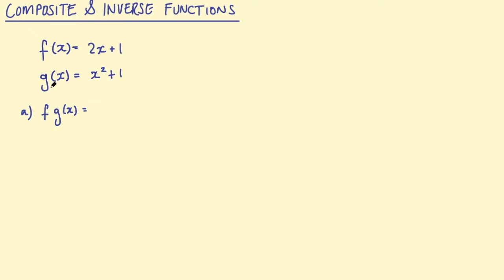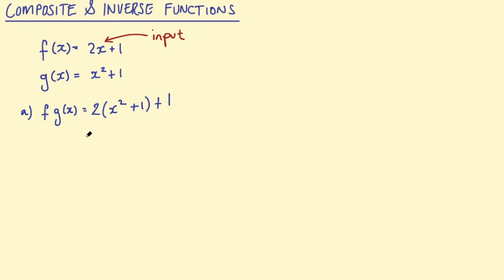The question is asking: find f of g. Remember, x in this function is the input. So if the input is another function, I need to put x squared plus 1 into the space where the input goes. This gives us 2 times (x squared plus 1), plus 1. Expand the brackets: 2x squared plus 2 plus 1, which simplifies to 2x squared plus 3. So f of g equals 2x squared plus 3.